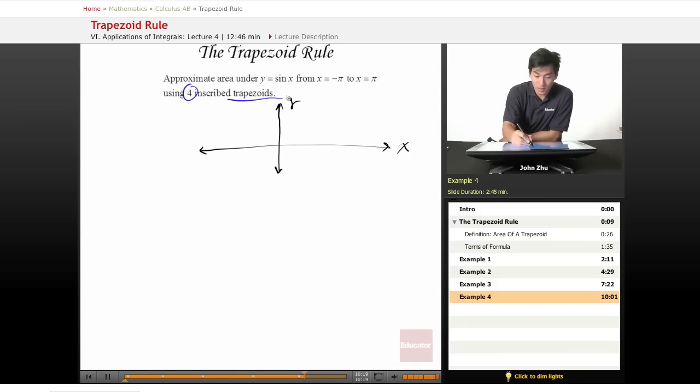Here's our y, here's our x. So then sine looks like this and here is our negative pi, our pi. So using four trapezoids, we'll have these four, two, three, four.